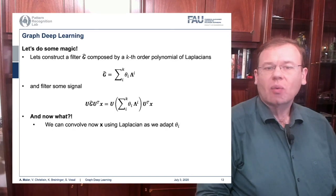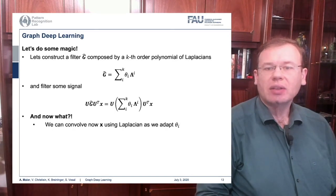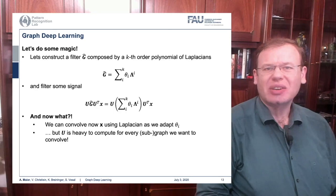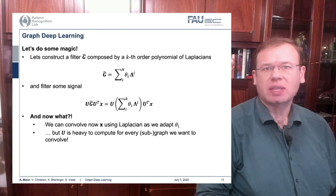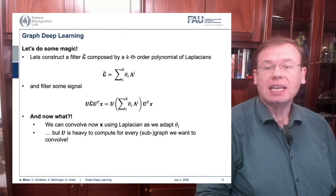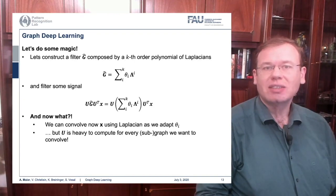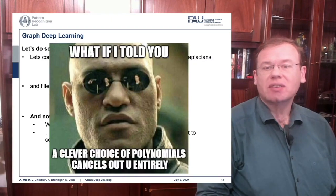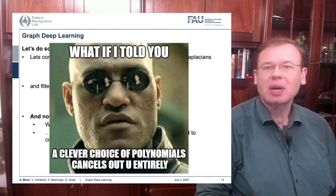So we can convolve x using the Laplacian as we adapt our filter coefficients theta. But U is actually really heavy — remember, we can't use the trick of a fast Fourier transform here, so it's always a full matrix multiplication. This might be very heavy to compute if you want to express your convolutions in this format.